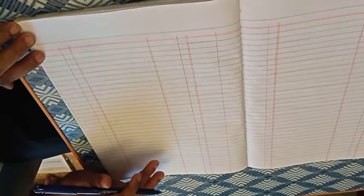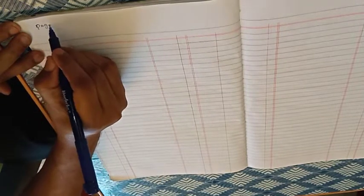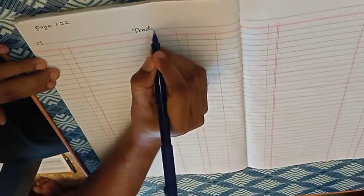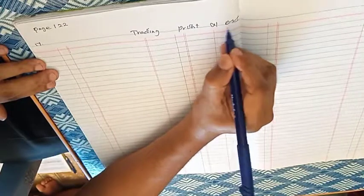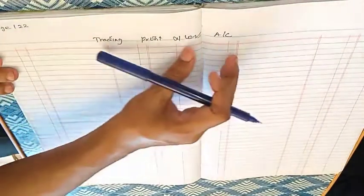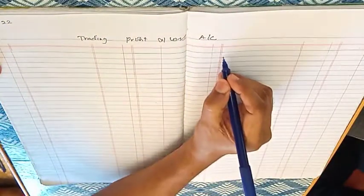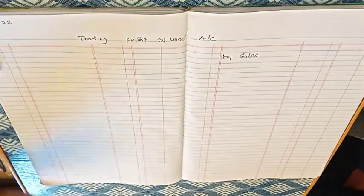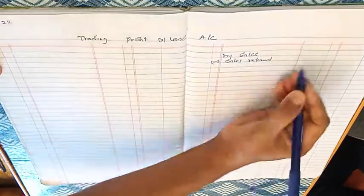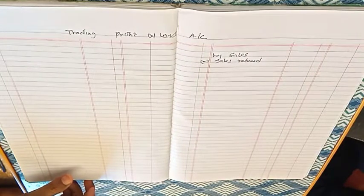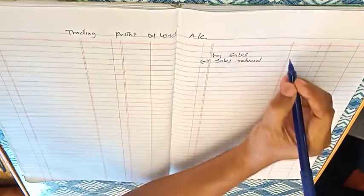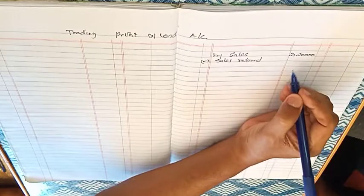Let's solve Sum page number 122, 17th sum — a Trading and Profit and Loss account. On the debit side: Sales return. On the credit side: Sales. Debit sale figures include $2,000 and $2,000 with a Sales Return.